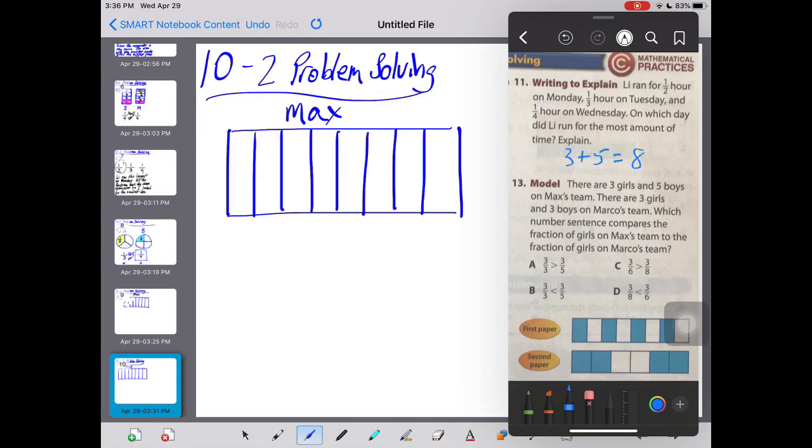And it says here there are three girls and five boys. So we've got a girl, a girl, a girl, and then the rest are boy, boy, boy, boy, and a boy. So it looks to me that I have one eighth plus one eighth plus one eighth are all girls. So if I add those all together, I could say three eighths, or three out of the eight team members are girls.